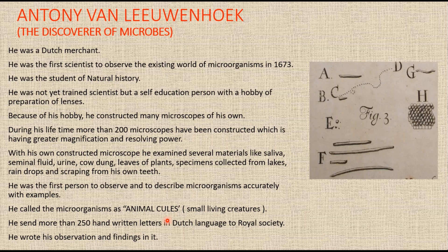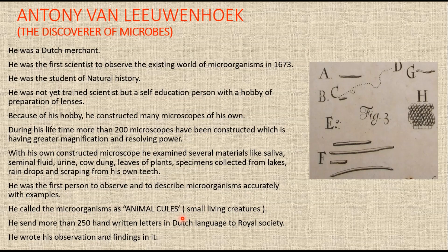He called microbes 'animalcules' and found them in a variety of sources like rain water, pond water, pepper infusion, and scrapings from his own teeth. He was astonished to see them alive and moving to and fro in the field of his microscope. All the main types of unicellular microorganisms — protozoa, algae, yeast, and bacteria — were first described by him. As early as 1676, Leeuwenhoek had been corresponding with the British Royal Society, sending communications regarding his microscope observations.